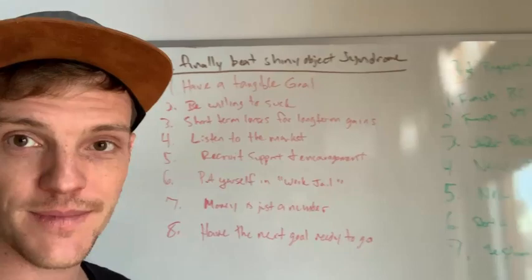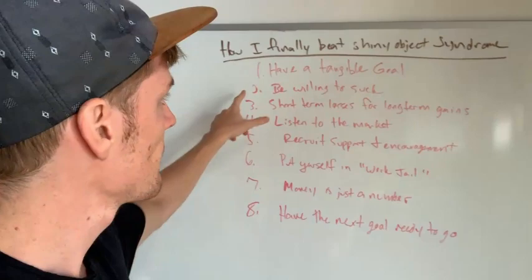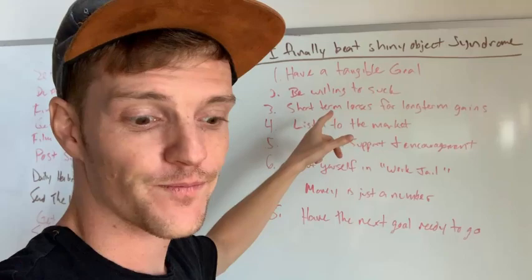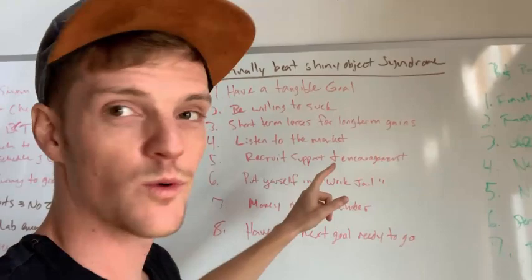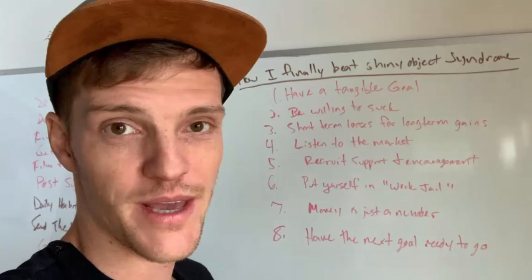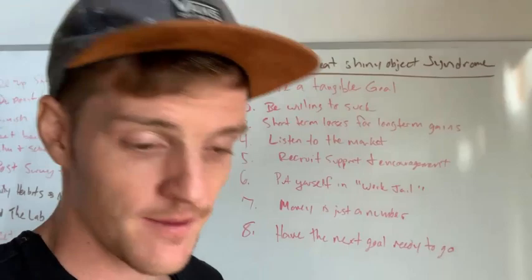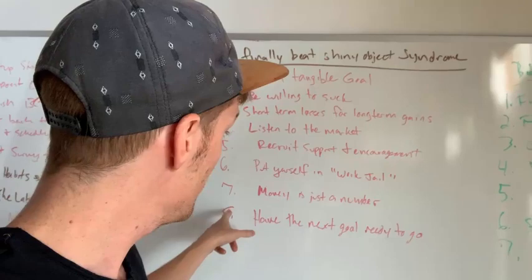So here's how I finally beat shiny object syndrome and got my Two Comma Club Award for doing over a million dollars a year in sales in one funnel. One: have a tangible goal. Two: be willing to suck. Three: short-term losses for long-term gains — please think long-term and don't be afraid of short-term losses. Four: listen to the market, let the market tell you what to sell. Five: recruit support and encouragement. Six: put yourself in work jail — you're in it for two years, no matter what, no leaving. Seven: money is just a number — don't be intimidated by it, and also don't think it's the end-all be-all in life, because once you have about $70,000 in income, life satisfaction isn't going to go up exponentially beyond that. And eight: have the next goal ready to go. Go out there, put these into practice, let me know your experience with shiny object syndrome in the comments, and I'll see you on the next video.